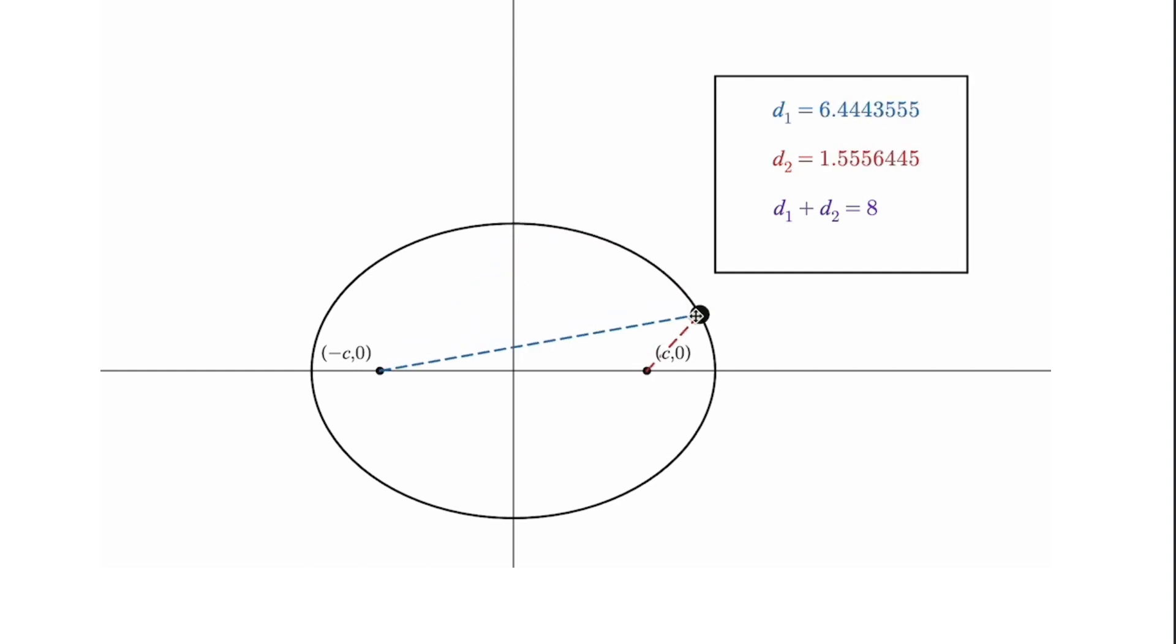So as we go around, we notice that d₁ plus d₂ in that box there does not change. The sum of the distances is always equal to 8.